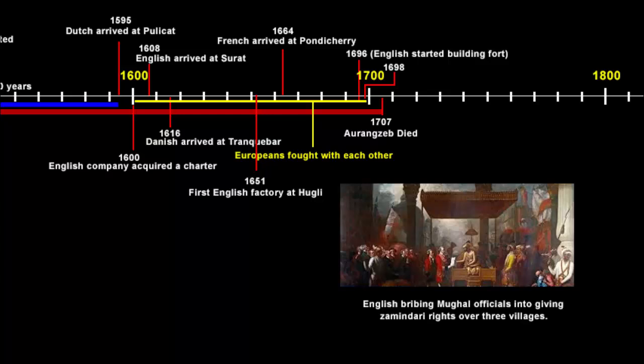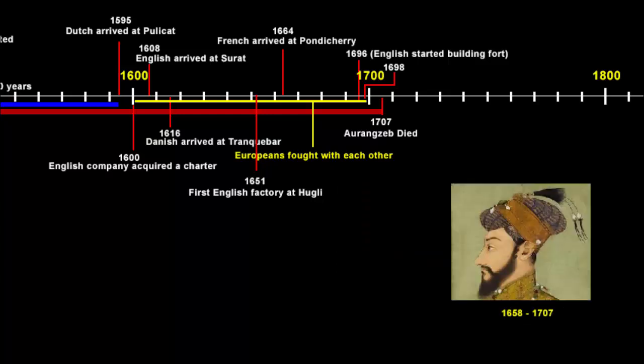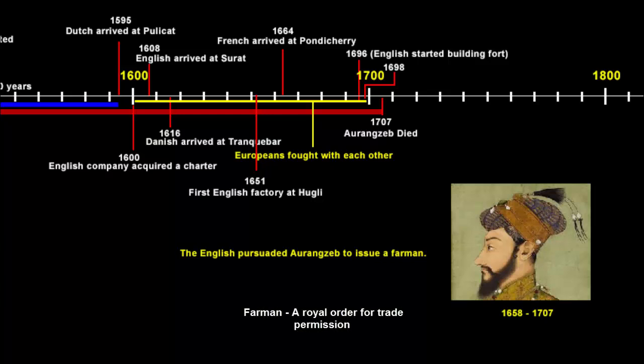One of those villages was Kalikata, which is known today as Kolkata. The Mughal emperor at this time was Aurangzeb. The English company also persuaded Aurangzeb to issue a firman — a royal order, similar to how the English acquired a charter from the queen. They had even acquired a firman from Emperor Jahangir while setting up their first trading post in Surat. The firman they wanted from Aurangzeb had a condition that would give the company the right to trade duty-free, which would cause enormous loss of revenue for Bengal.